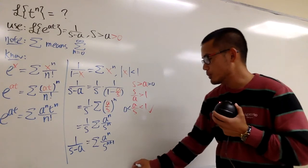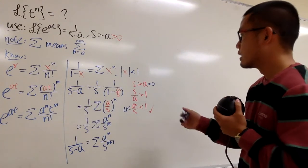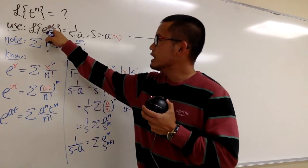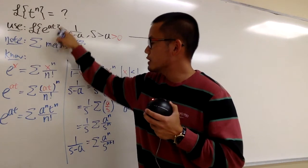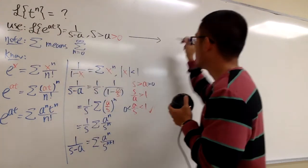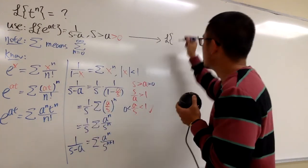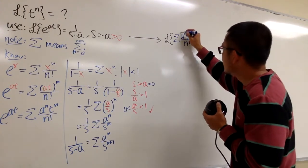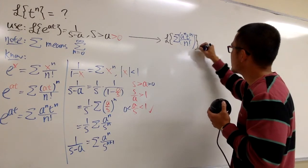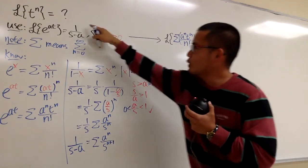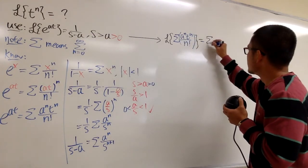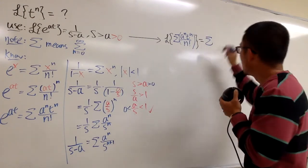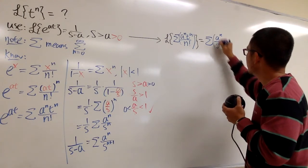Now let me go back and connect things. Instead of writing e to the at in the Laplace transform, I'll replace it with its series form. So the Laplace transform of the summation of a to the n times t to the n over n factorial equals 1 over s minus a, which is the summation of a to the n over s to the n plus 1.